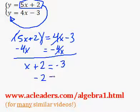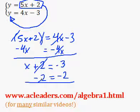Now I can subtract 2 from both sides. 2 minus 2 is 0, x remains, negative 3 minus 2 is negative 5.